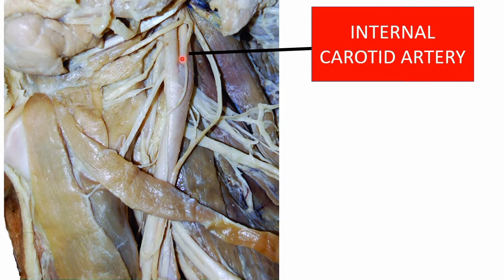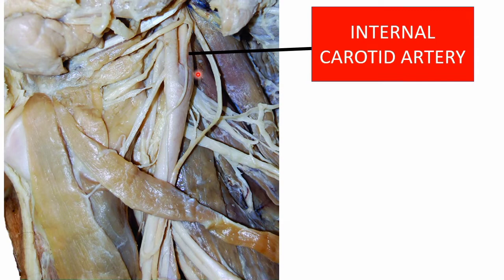The external carotid artery is located anteromedially, while the internal carotid artery is found posteriorly. The key identification feature of the internal carotid artery is that no branches come from it in the neck region. They may ask specifically what branches come from the internal carotid artery in the cranial cavity or in the petrous part of the temporal bone.